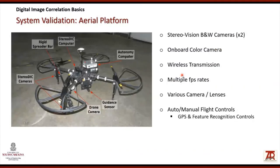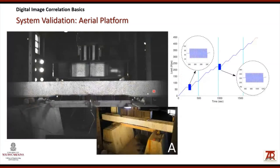The third validation is a DIC system mounted on an aerial platform — a drone — using lower-resolution cameras due to payload limitations at the time. There is an onboard color camera with wireless transmission, and the drone can fly fully automatically or in manual flight control, with feature recognition and GPS control available. The beam is loaded in steps and harmonic excitation at two levels of loading was applied to evaluate how the drone-based DIC system performs.